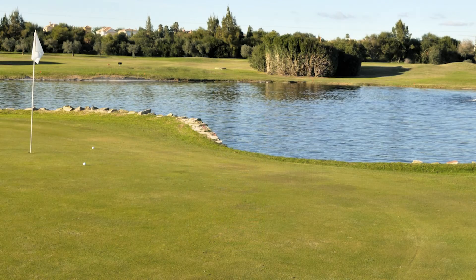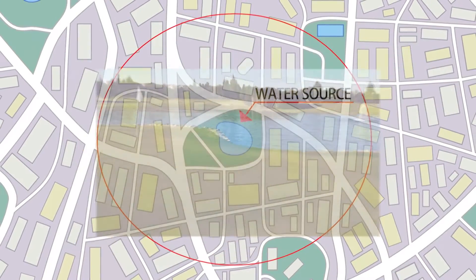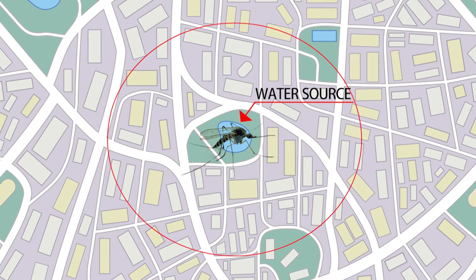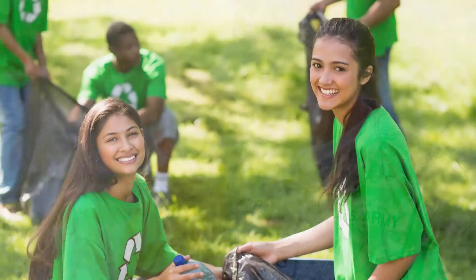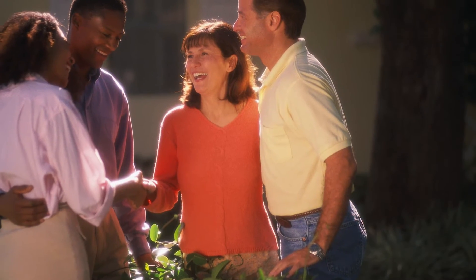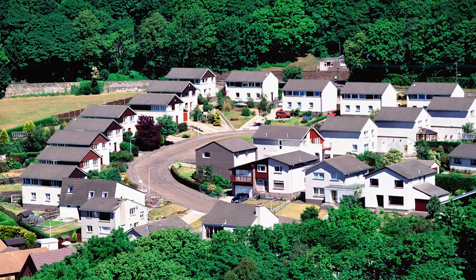Keep in mind that adult mosquitoes can fly several miles from the water source where they developed. Therefore, your attempts at controlling mosquitoes on your premises may not eliminate all biting activity. A community-wide effort may be needed to reduce mosquito populations to tolerable levels. This will require the cooperation of neighboring homeowners, homeowners associations, and local government agencies to reduce adult populations, larval populations, and breeding sites.